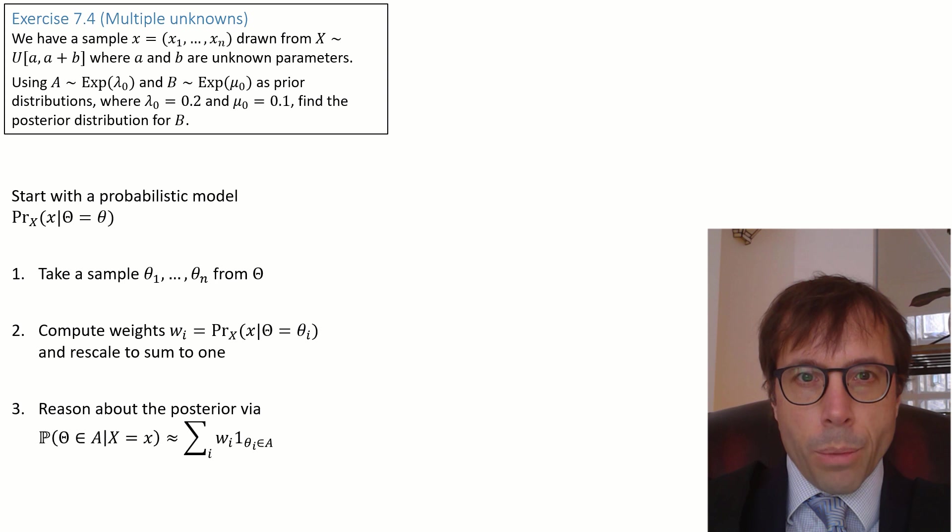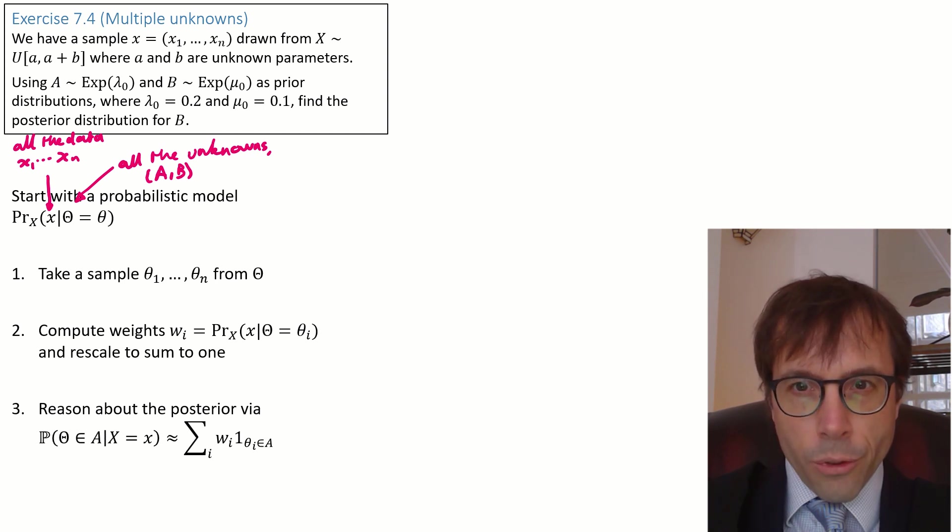Let's take the computational approach first. First, we start with a probabilistic model. These are the general guidelines shown on the left, but we have to translate them to our setting. What is X? X should always be the entirety of the data set that we're given. It's a sin to waste data when we could be using it to learn from. So here, X denotes the entire sample, X1 up to Xn. What's theta? Theta should always be the entirety of all the unknown parameters. There are two unknowns here, A and B, and theta stands in for the pair A comma B.